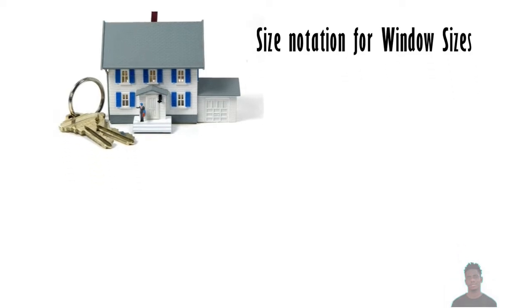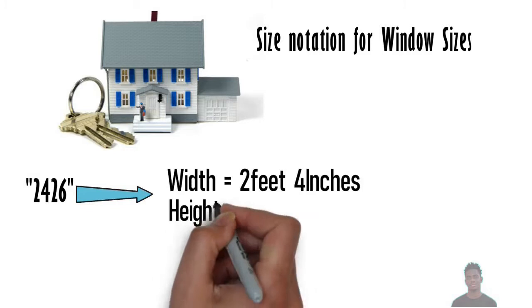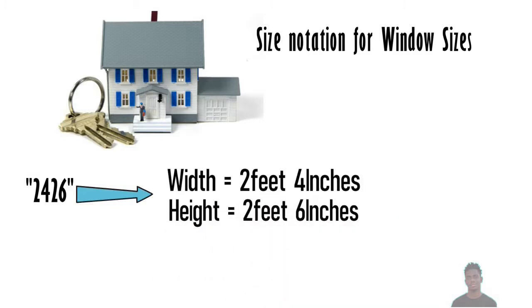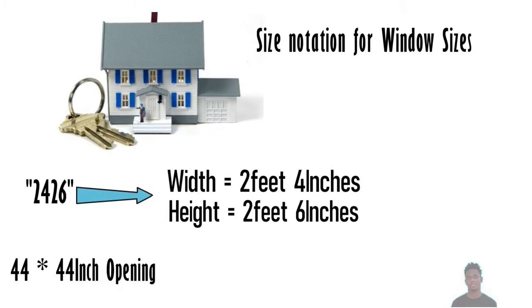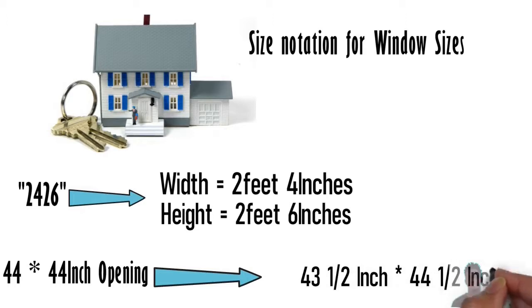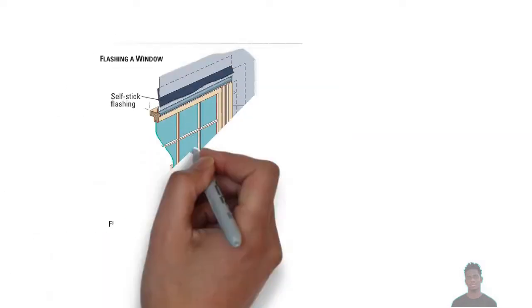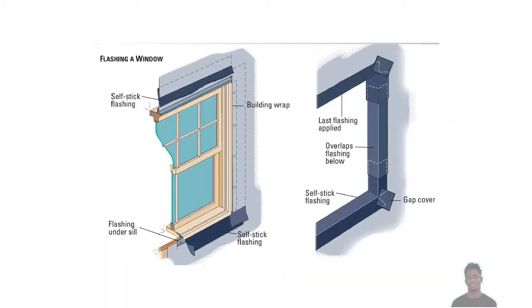For example, a 2426 replacement window has a width of 2 feet 4 inches and a height of 2 feet 6 inches. Manufacturers tend to add half an inch to this measurement to give plenty of room for installing the windows. So if your window notation indicates a 44x44 inch opening, it would actually measure 43.5 inches by 44.5 inches. This half-inch adjustment accounts for room on either side so the window operates properly, and also accommodates flashing materials — the materials that connect the wall and the window.